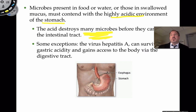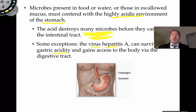There are some exceptions. If you eat food with a large number of bacteria, it might get through the stomach and cause problems. Some viruses that cause hepatitis A can survive the acidic environment. There's also acid-tolerant bacteria — H. pylori — which is able to survive stomach acid and is associated with stomach ulcers. But those are the exceptions. Most microbes come to the end of their life when they encounter the stomach.